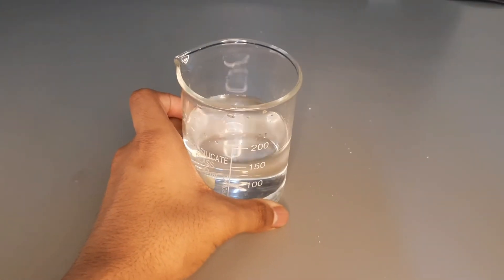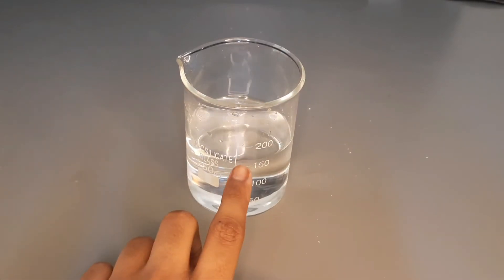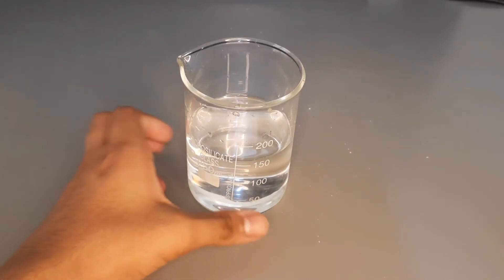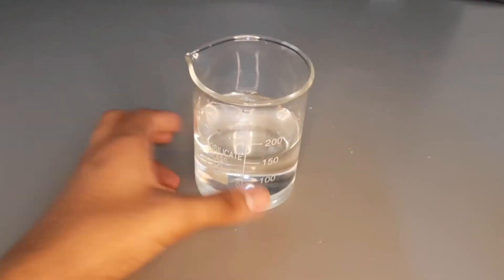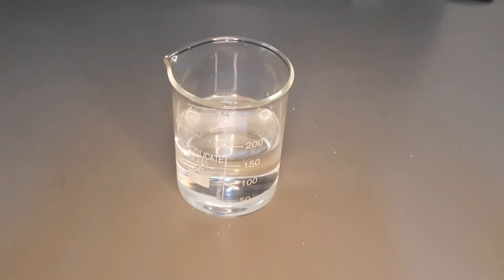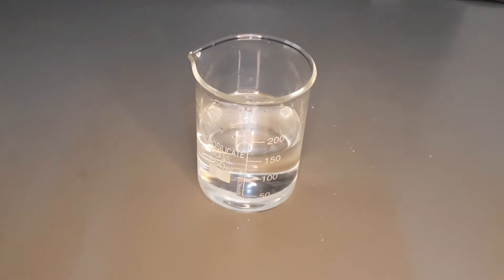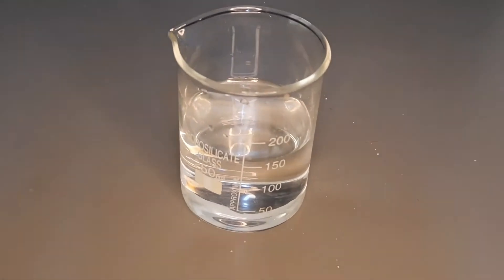Here the sugar grains break into tiny sugar particles when they dissolve in water. These tiny sugar particles occupy space between the water molecules. That is why the level of water does not rise. This experiment proves that particles of matter have space between them.